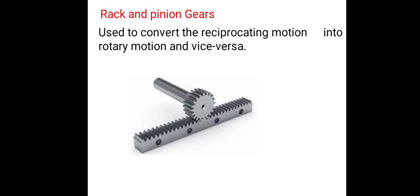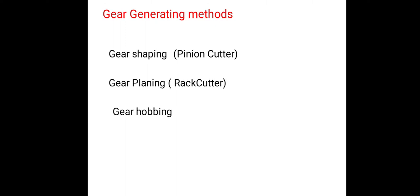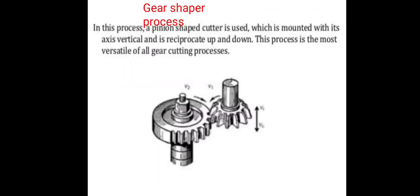Rack and pinion gears are used to convert reciprocating motion to rotary motion. The rack is mounted on an axis vertically and moves in reciprocating up and down motion. This process is the most versatile of gear cutting processes used to cut gears.